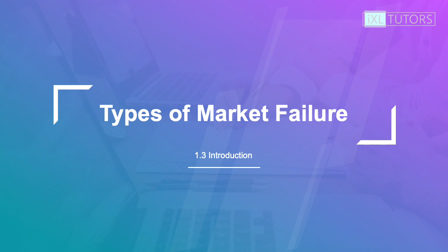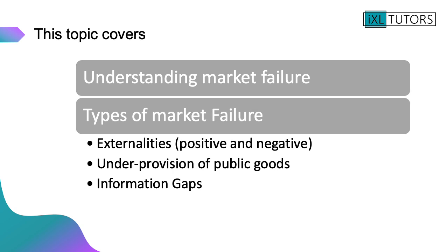Today we're going to do a short introduction into the different types of market failure and what market failure is, before we move on to look at all of the individual types in a lot of detail in later videos. This topic will cover understanding market failure and a brief intro into the three different types: positive and negative externalities, the under-provision of public goods, and information gaps.